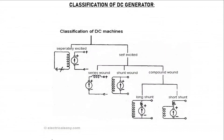This completes the classification of DC generators. The full classification is: separately excited, and self-excited (which includes series wound, shunt wound, and compound wound — with compound wound further divided into long shunt and short shunt).